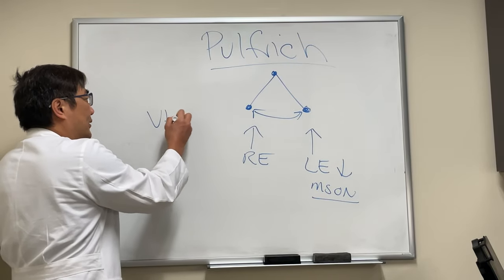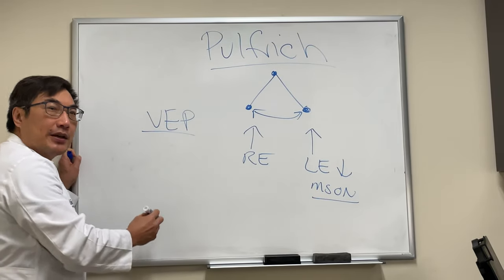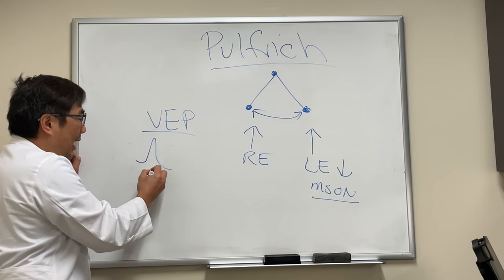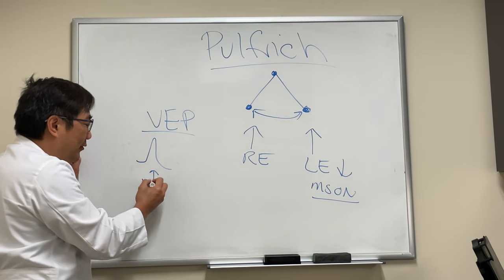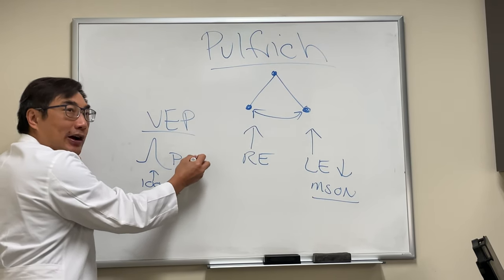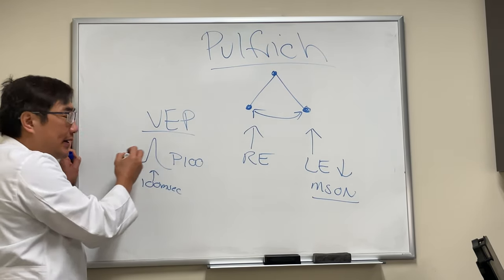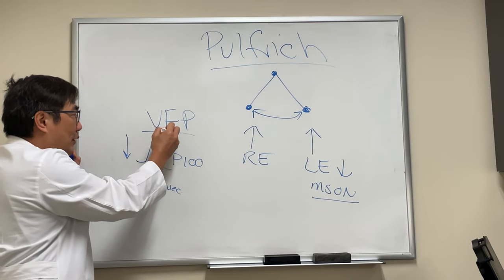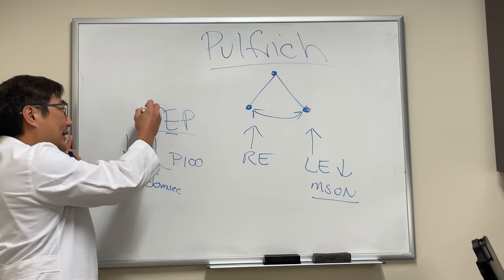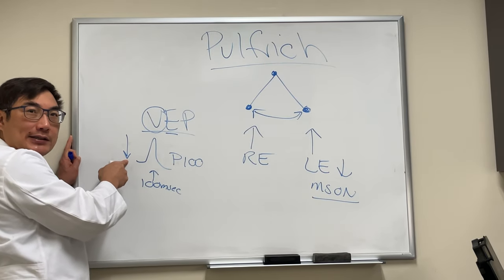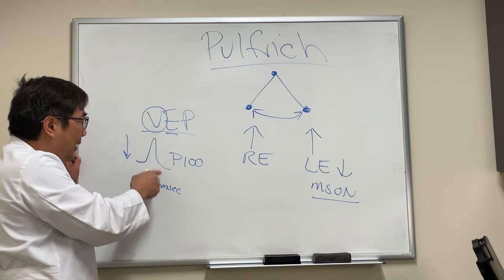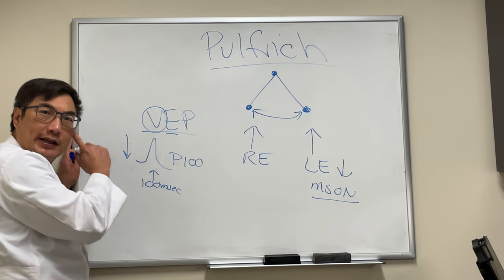We can detect this conduction deficit with visually evoked potentials. Normally with a VEP, there's a positive deflection wave at 100 milliseconds — we call this P100. The stimulus is delivered at time zero, and 100 milliseconds from that time, you will have a detectable signal in the occipital cortex.